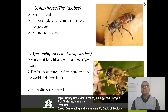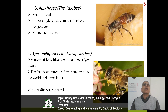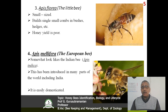The third species is Apis florea, known as the little bee. It is small sized and normally builds single small combs in bushes and hedges. Honey yield is very poor. The fourth species is Apis mellifera, otherwise known as the European bee. It looks somewhat like the Indian bee Apis indica. It has been introduced into many parts of the world including India, and it is easily domesticated.